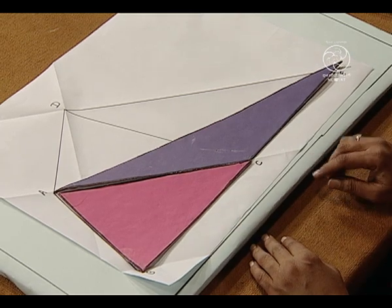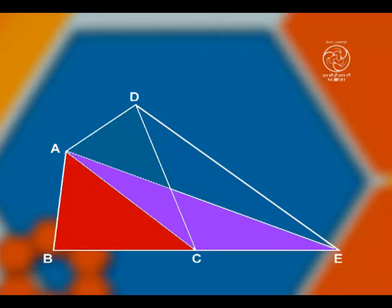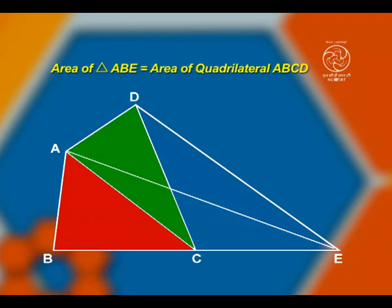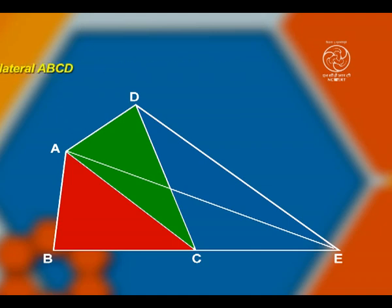So, we observe that the area of triangle ABE is equal to the area of quadrilateral ABCD. Friends, you can verify this by taking any other quadrilateral.